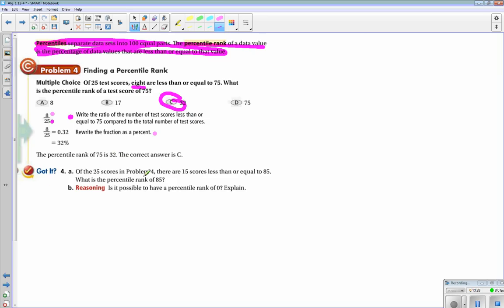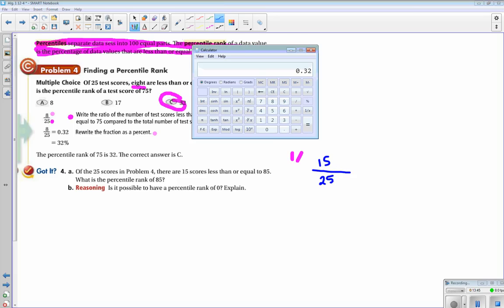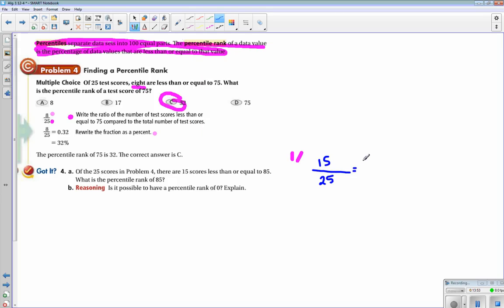Of the 25 scores in problem four, there are 15 scores less than or equal to 85. What is the percentile rank of 85? So we go 15 divided by 25, so that's 0.6 or 60%. So the percentile rank of 85 is 60.